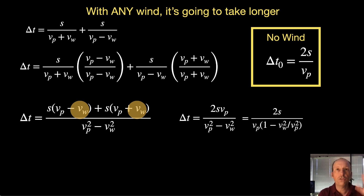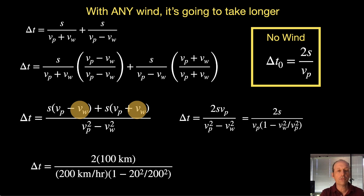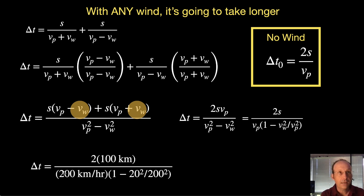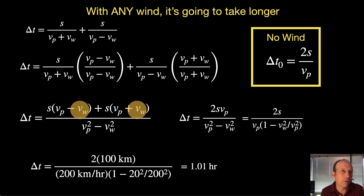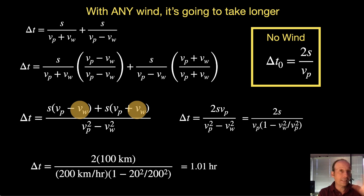Let's put in some values. Using a wind speed of 20 km/h, I have 2 times the distance S, airspeed 200 km/h, and then 1 minus 20² over 200². If you put that in, I get 1.01 hours — not that much different, but longer. That's the answer: it takes longer.